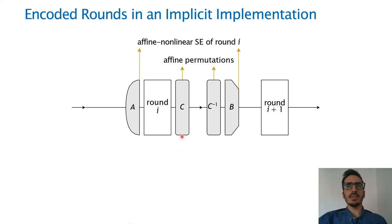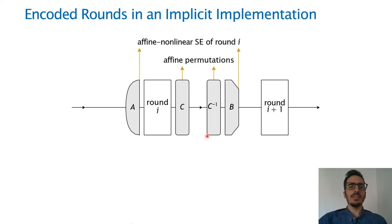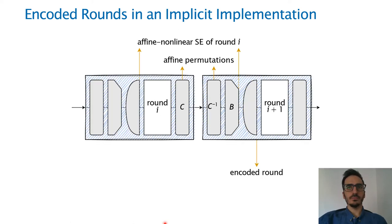Then we append a random affine permutation and its inverse between the output of the round and the second element of the self-equivalence, and all these modifications still preserve the input and output behavior of each round. Finally, we merge the affine permutation and the self-equivalence with the round function, forming the encoded rounds.